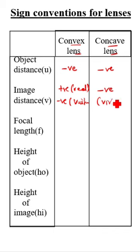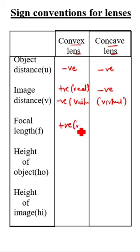Negative is virtual. Here focal length is positive for real, negative for virtual.